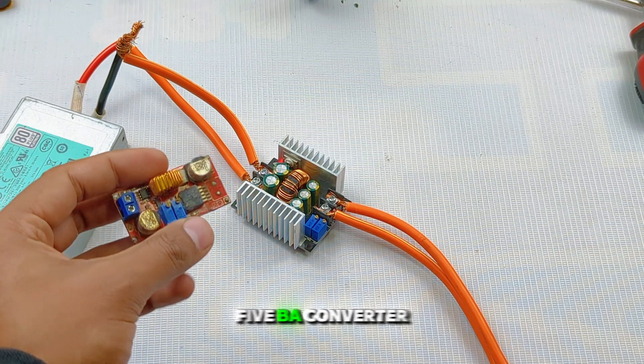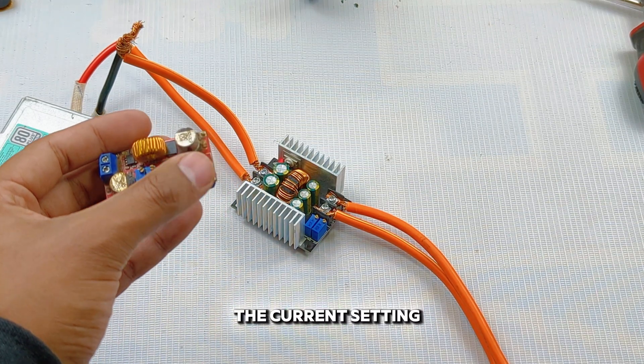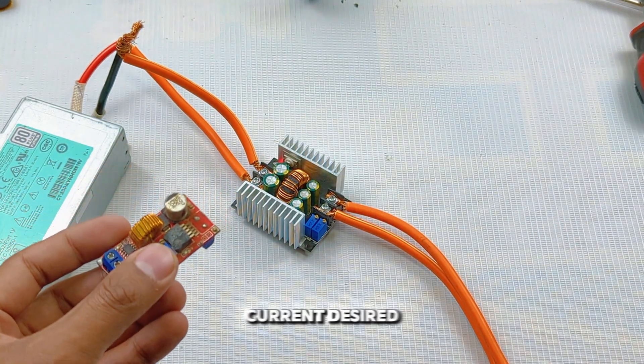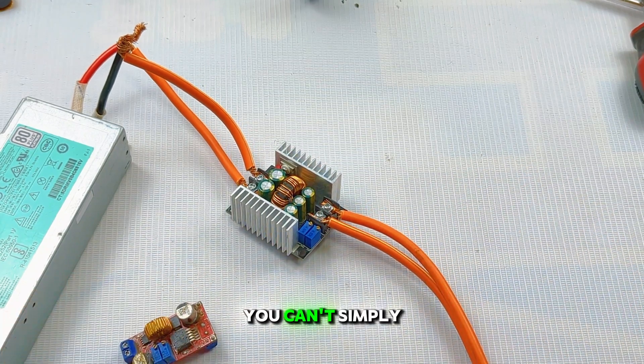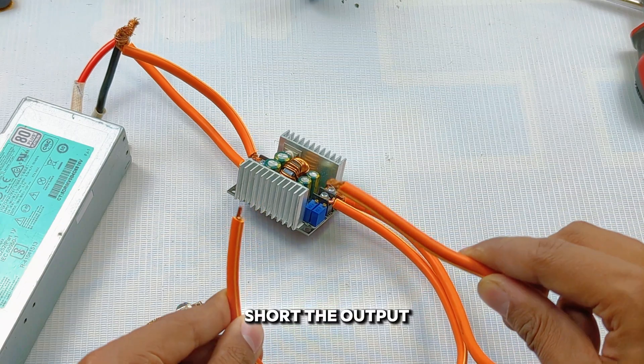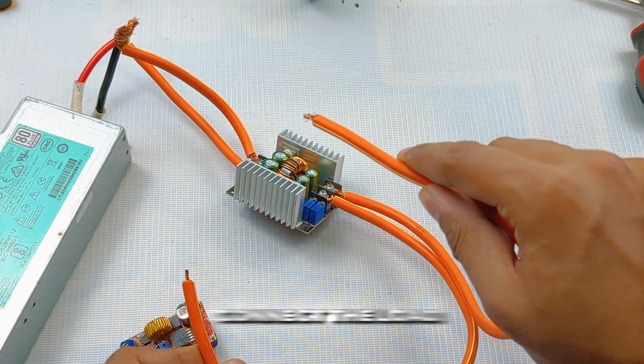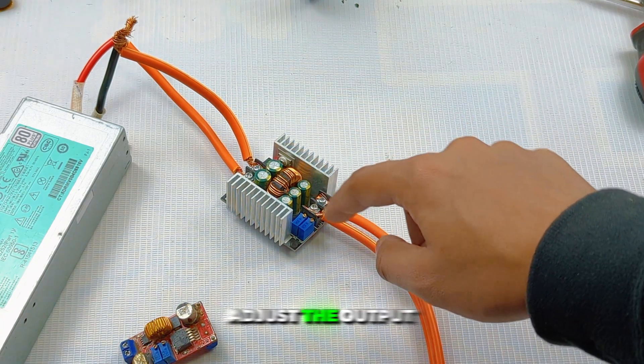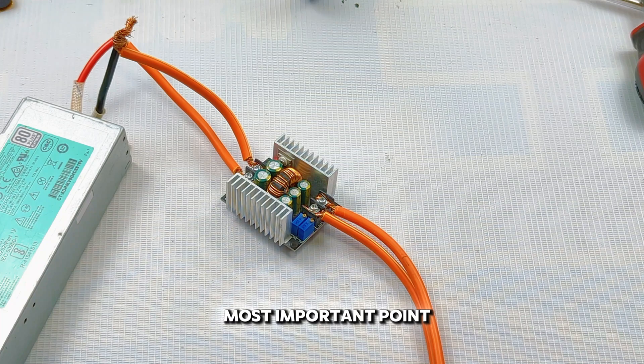Unlike the XL4015 buck converter, where you can short the output terminals and it goes into current static mode to adjust the output current, in this module you can't simply short the output terminals because it's capable of doing 20 amps. You always have to first connect the load, then you adjust the output current with this potentiometer. This is the most important point to be noted.